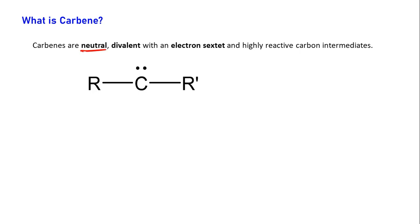A carbene is neutral — that means there will be no positive or negative charge. It is divalent, meaning there will be 2 bonds, with an electron sextet: surrounding carbon there will be a total of 6 electrons. It is highly reactive. There are 4 electrons of carbon itself plus 2 coming from the groups R and R prime, which may be hydrogen, any alkyl group, or other groups. So carbene has 2 bonds — one with R, one with R prime — and is neutral.